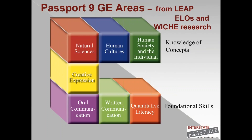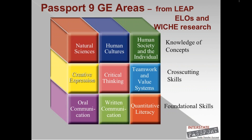The knowledge areas also include human cultures, which focuses on history, anthropology, archeology, political science, geography, ethnic studies, gender studies, and languages; creative expression, which we'll focus on today, consisting of music, visual arts, design, theater, film and media, literature, and architecture; and human society and the individual, including sociology, geography, history, criminology, psychology, and economics. Then we have two cross-cutting skills — critical thinking and teamwork and value systems — which may be embedded in any of the knowledge and skill areas or across multiple courses.